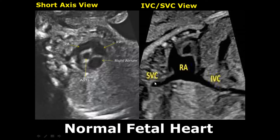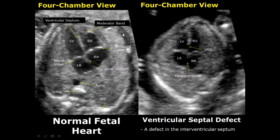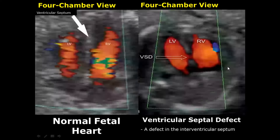In a ventricular septal defect, there will be a hole in the interventricular septum creating a connection between the right and left ventricles. On color Doppler, we can see blood passing through this ventricular septal defect.